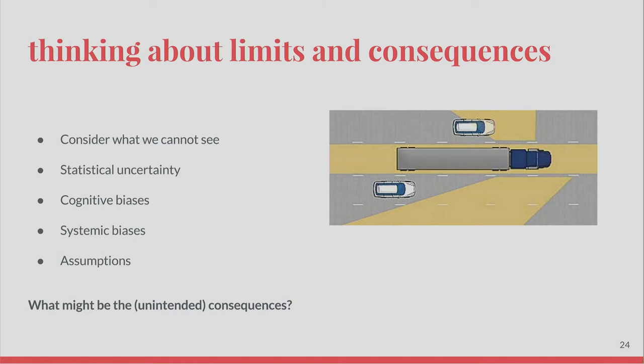Constructing a data product or being a consultant is also very much about thinking about the limits and consequences of what we're building. In many cases, we're asked to do something with insufficient or incomplete data. What is it we can actually see about the system, and what can we not see? What consequences will it have? People want a single number as a result, when actually we should be asking about our uncertainty — how confidently can we state that number? That has to be constantly reiterated. And cognitive biases of both the people constructing the system and the people using the system after it's been constructed are also something to consider. Daniel Kahneman's new book is a great introduction to that subject.